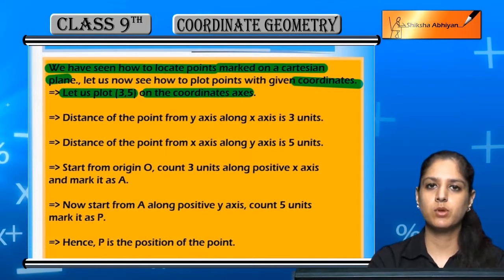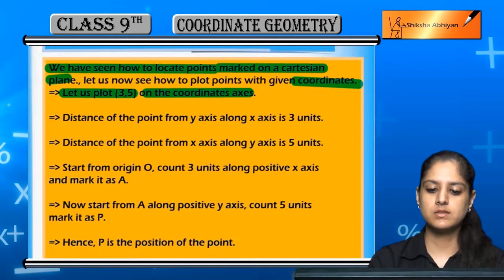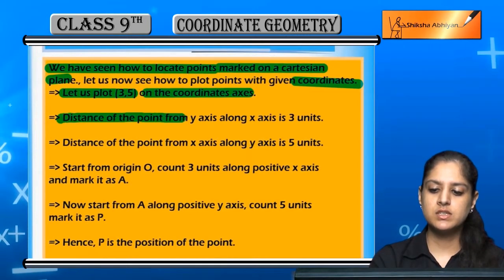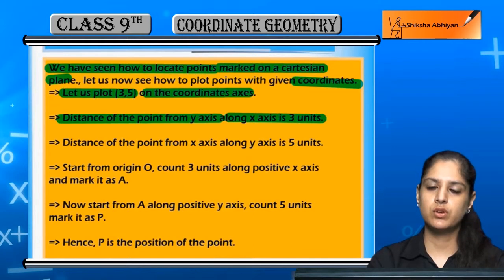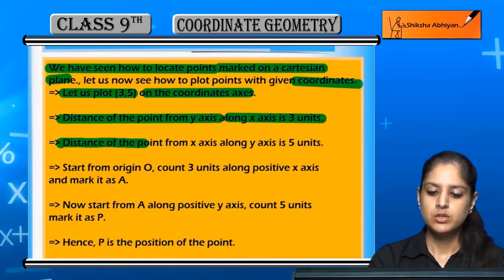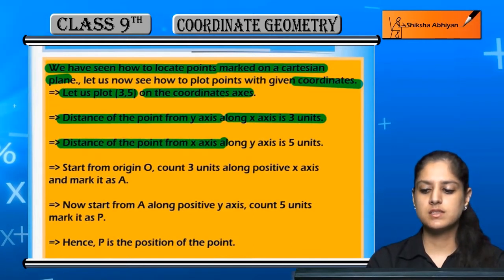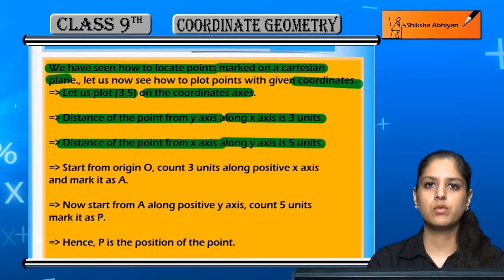For example, 3,5 agar ek coordinate hai, ek point hame plot karna hai coordinate axis pe. The distance from y-axis is 3 units kyunki woh x-coordinate hai. The distance from x-axis is 5 units kyunki woh y-coordinate hai.